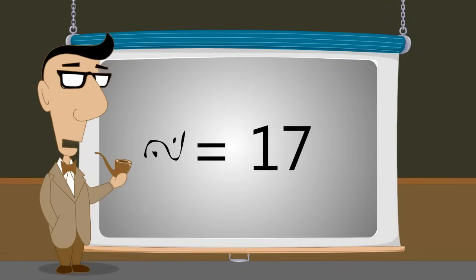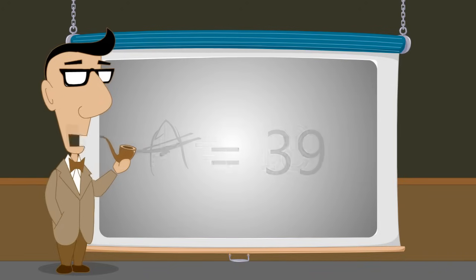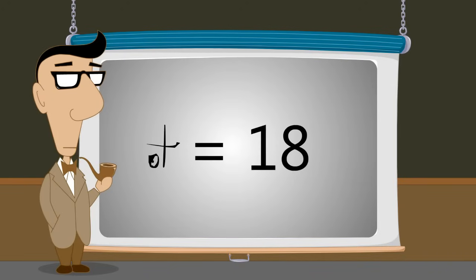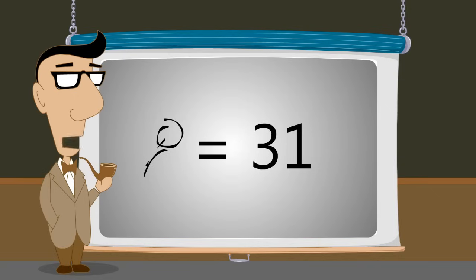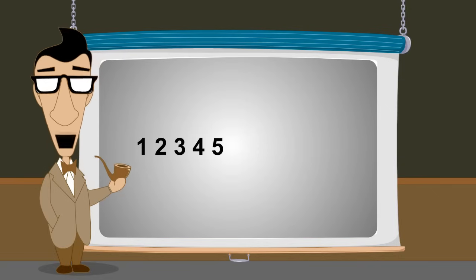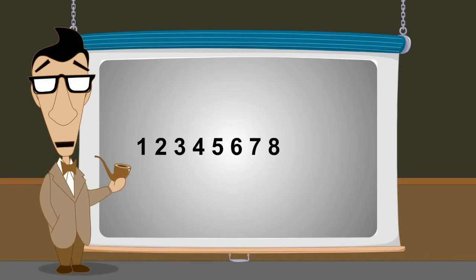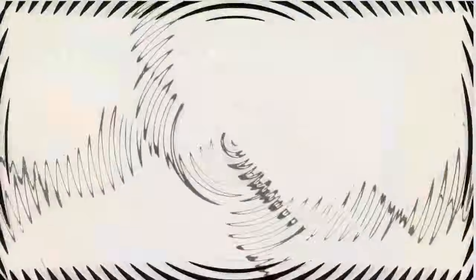Another option would be to invent different names and symbols for each possible quantity. This seems like a simple solution, but there is still a problem. Remember that you know nothing about our modern base-ten number system, which uses only ten symbols in different combinations. So you would have to invent a new word and symbol for every possible quantity.